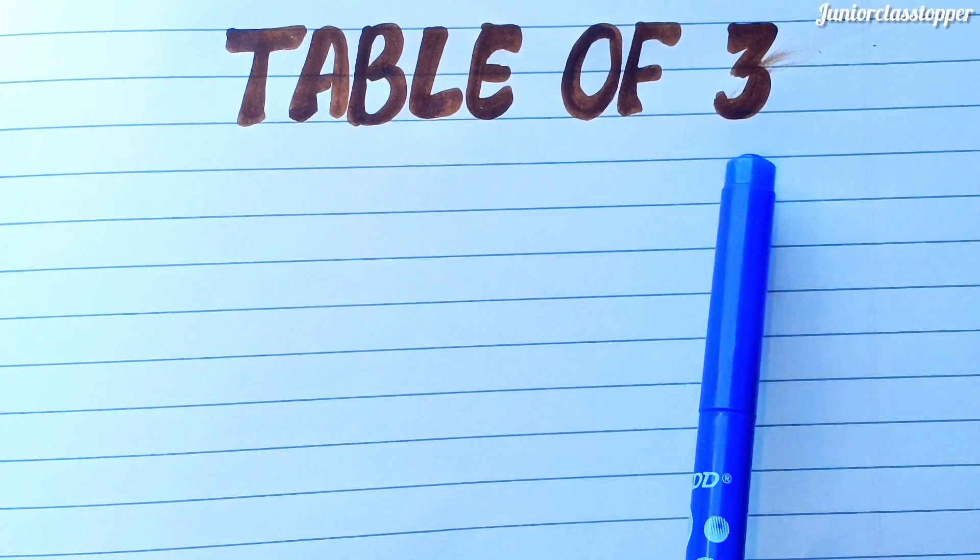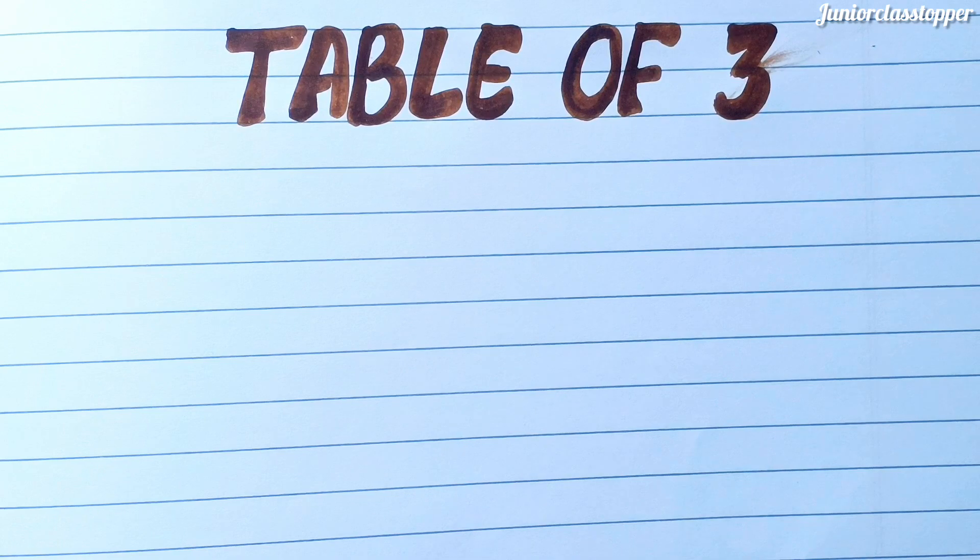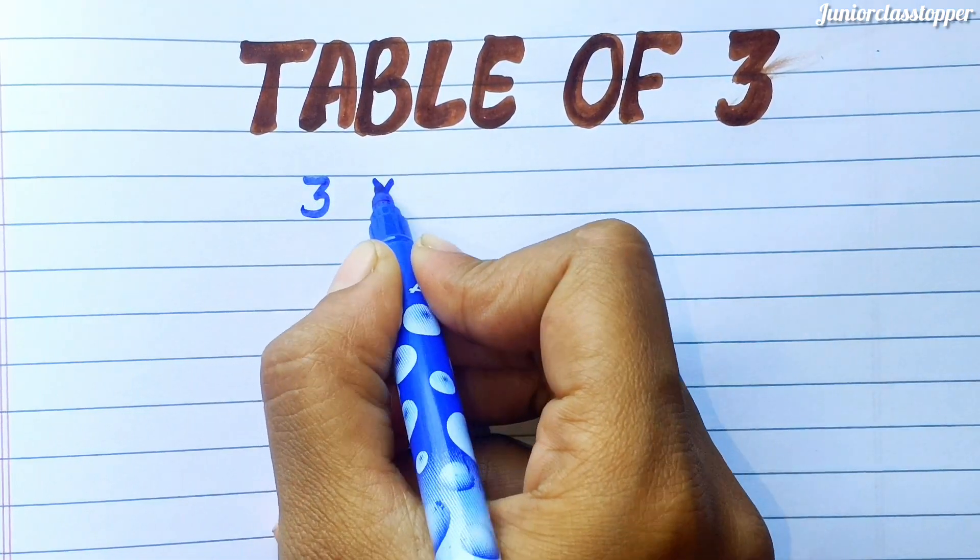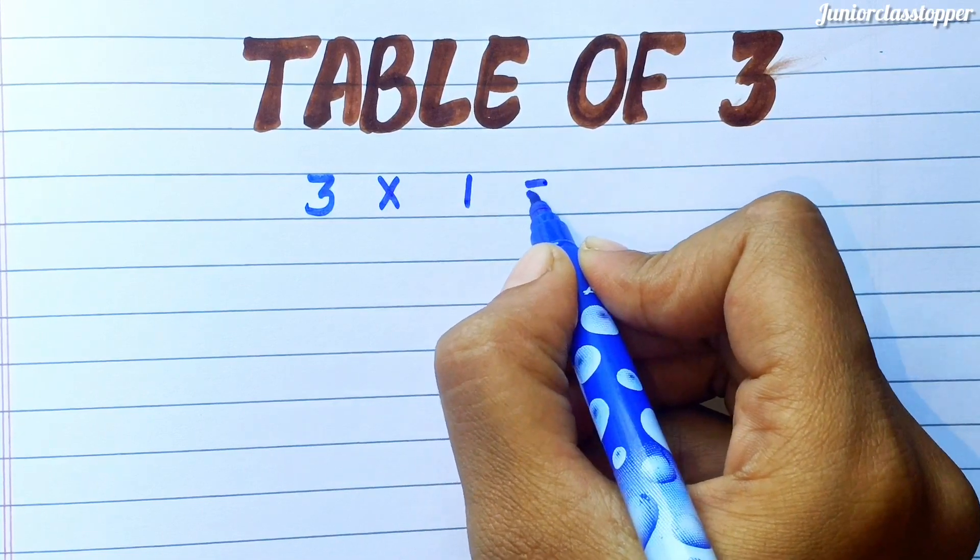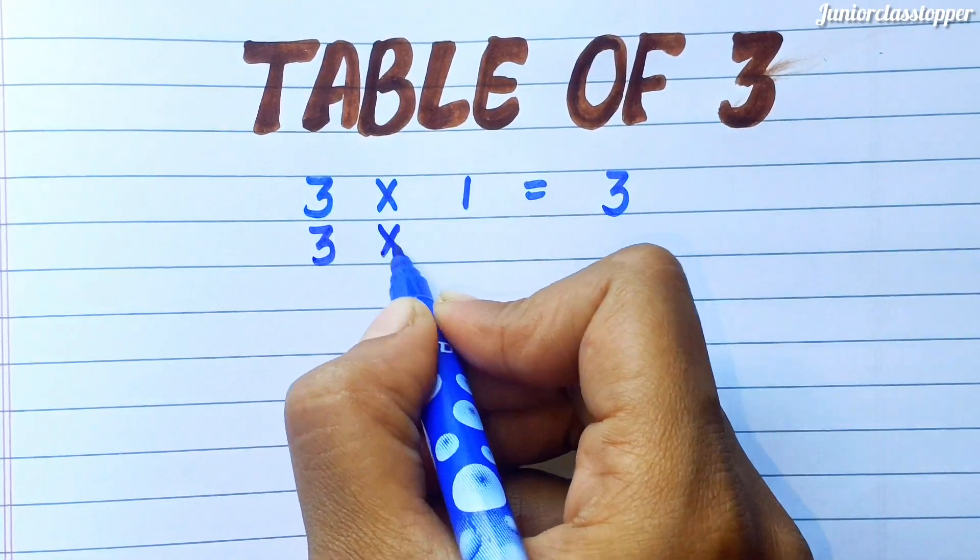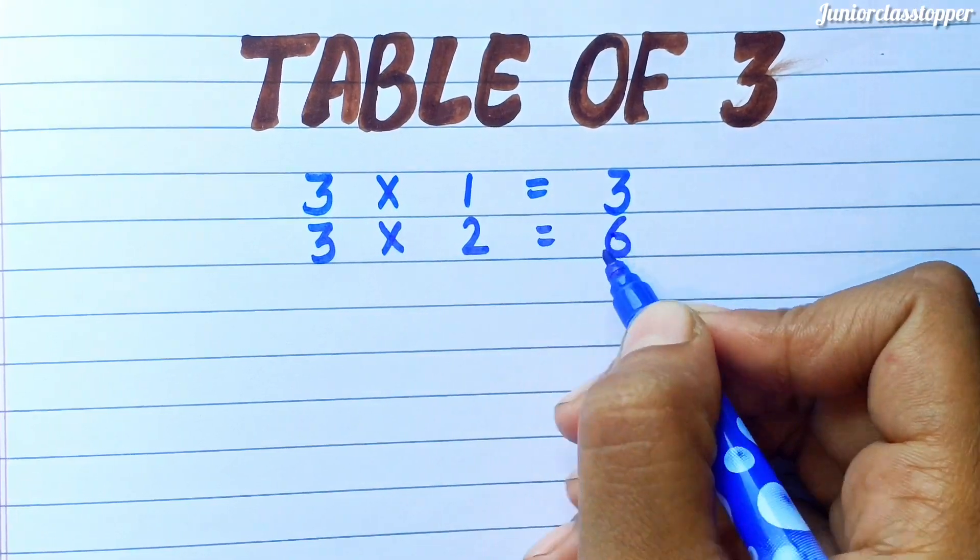Table of three. Three ones are three, Three twos are six.